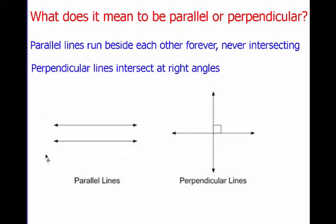Parallel lines are lines that run beside each other forever without ever intersecting, meaning they never touch. So here's an example of parallel lines. If I was to take these lines and draw them all the way across the screen, they'd go on forever without ever intersecting with each other.